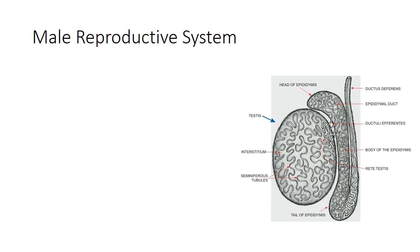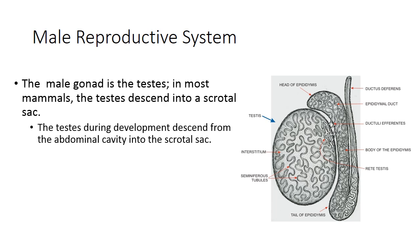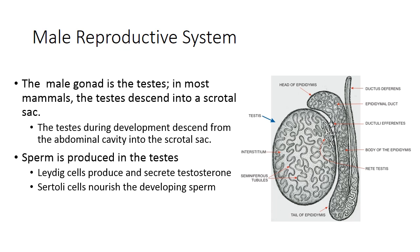The urogenital system also encompasses the reproductive systems. For the male reproductive system, look at the picture showing the testis, seminiferous tubules, epididymis, efferent ductules, and vas deferens. The male gonad is the testes. In most mammals, the testes descend into the scrotal sac — they start out in the abdominal cavity during development and descend via a structure called the gubernaculum. Sperm is produced in the testes, specifically in the seminiferous tubules.